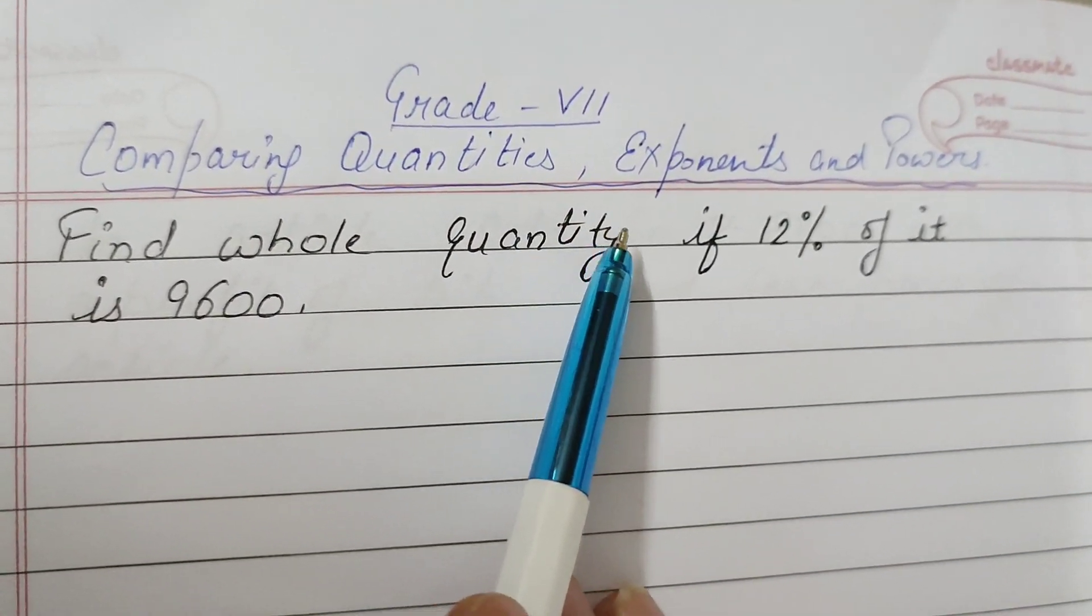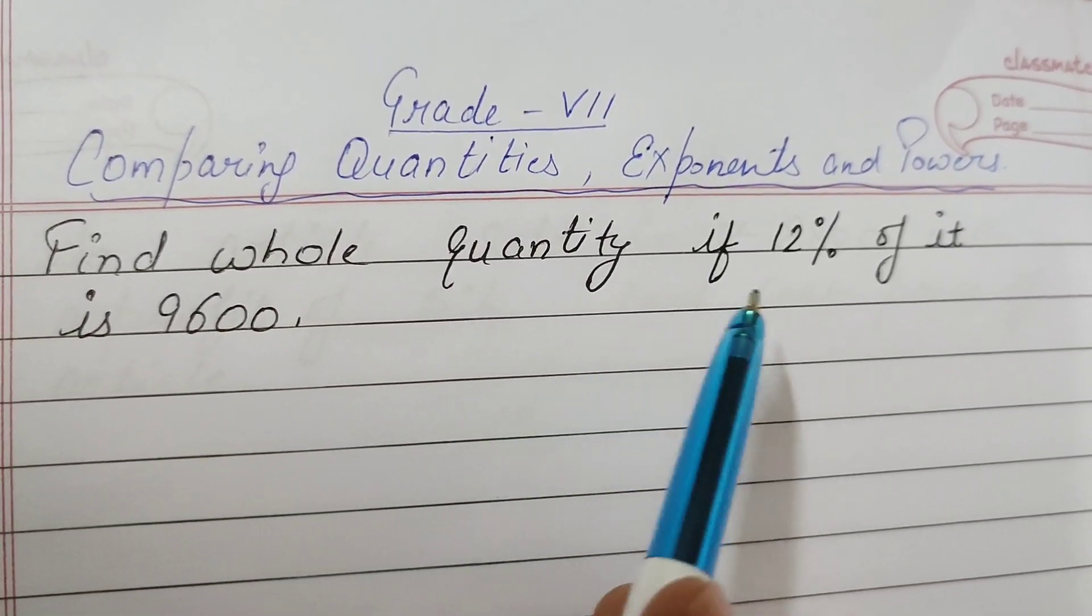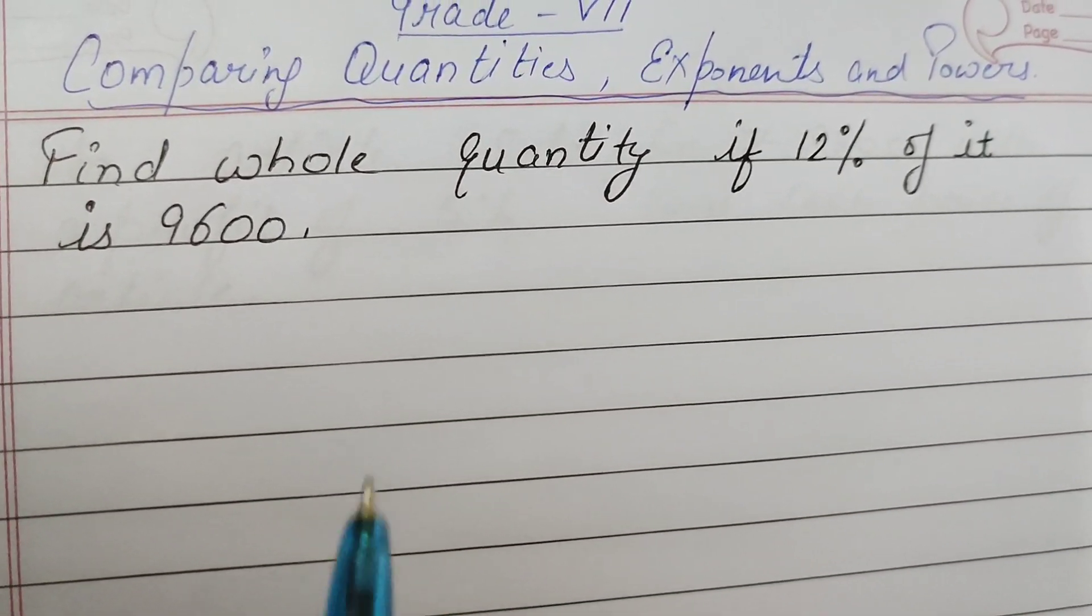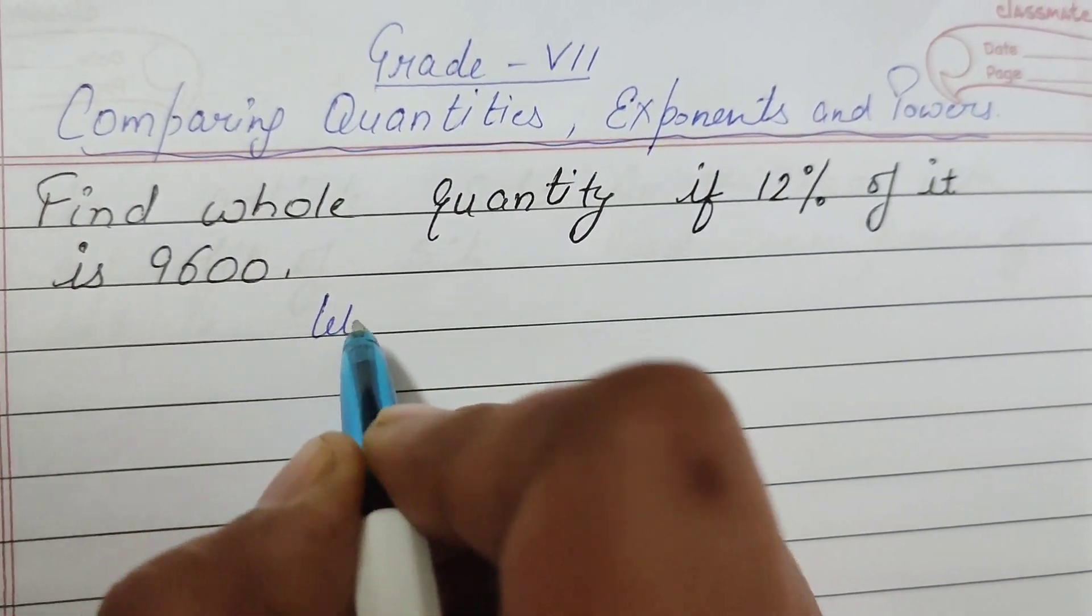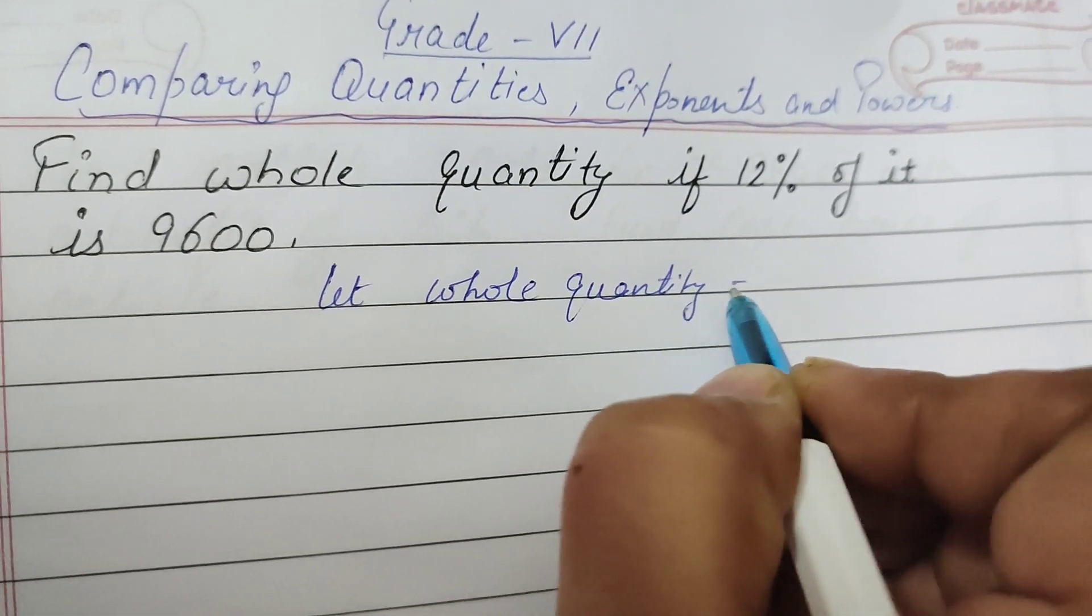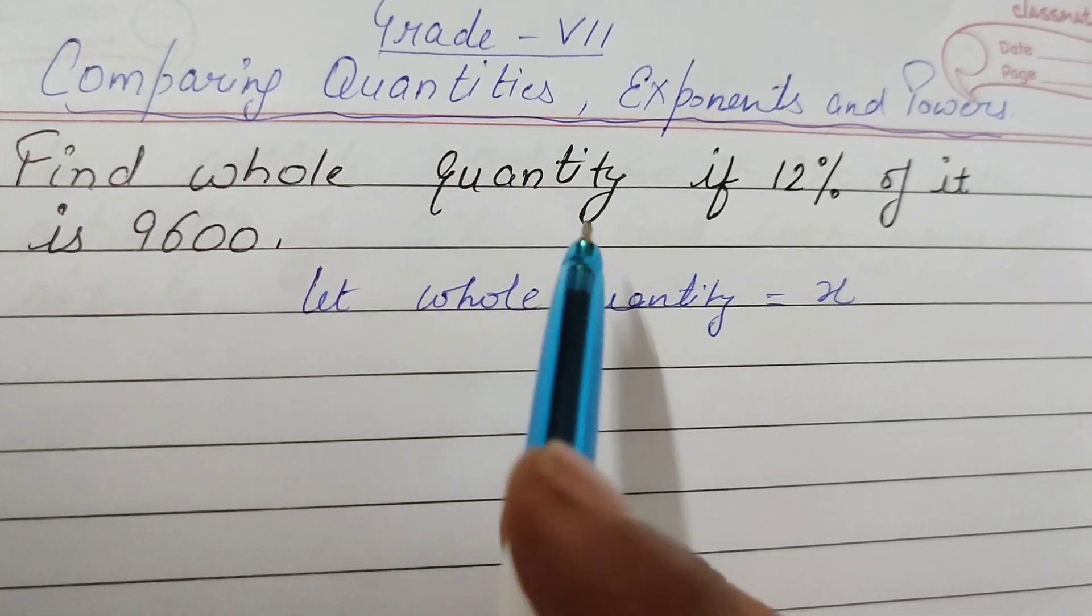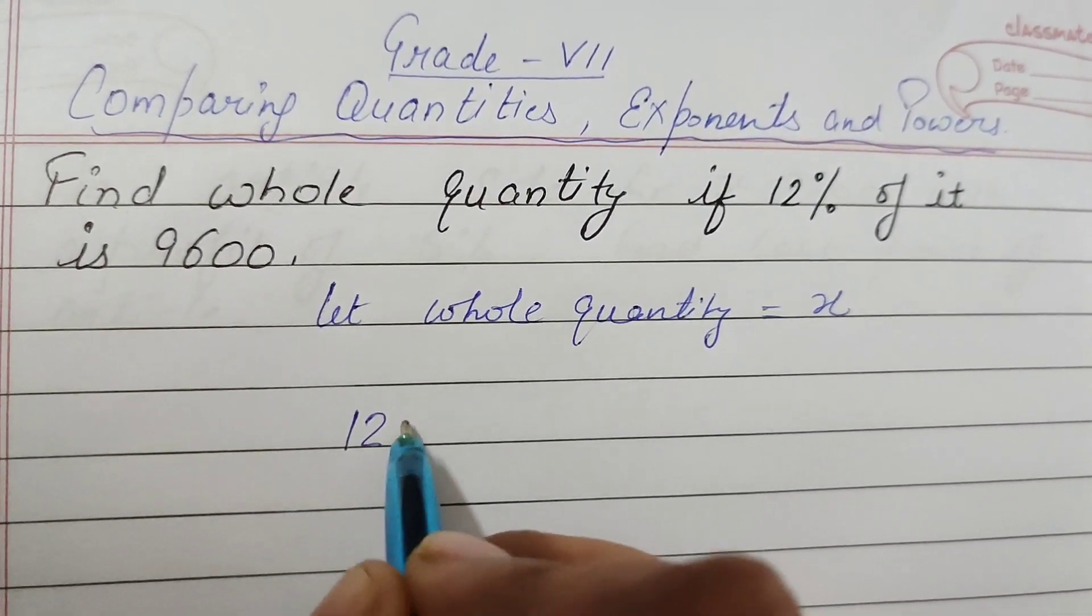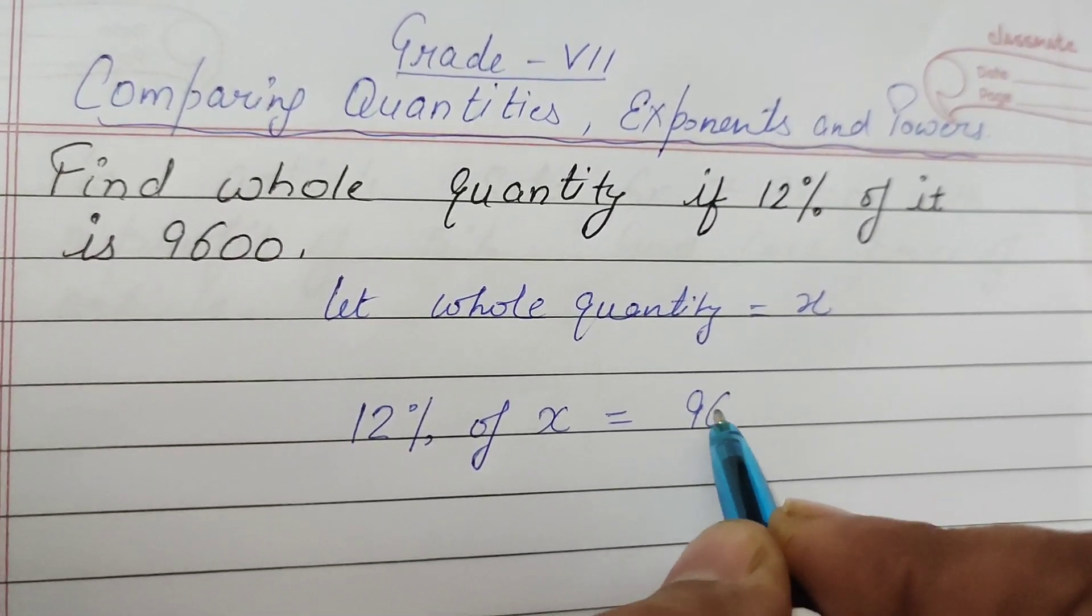Grade 7 comparing quantities, exponents and powers. Let us discuss a few questions. Find whole quantity if 12% of it is 9600. First of all, you should know how to write it down. Let whole quantity be X. Suppose the whole quantity to be X.